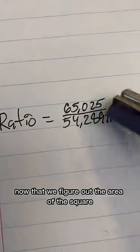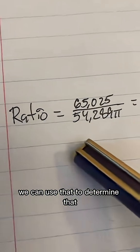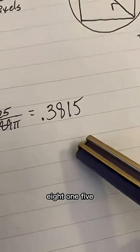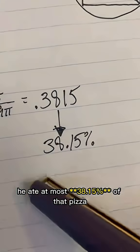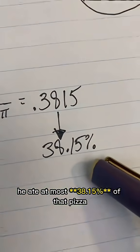Now that we've figured out the area of the square as well as the area of the pizza surrounding it, we can use that to determine that the ratio between them is going to be 0.3815. Which means, even being generous, he ate at most 38.15% of that pizza.